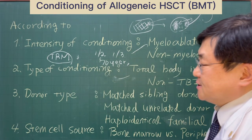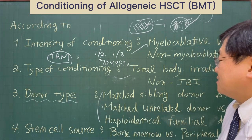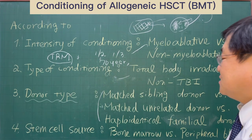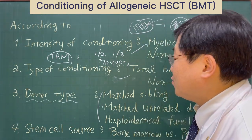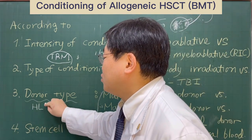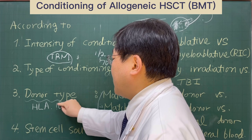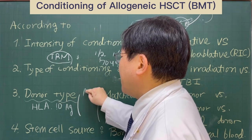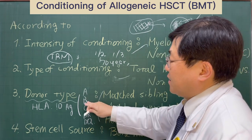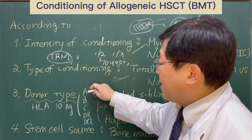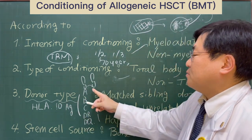The third criterion is according to the donor type. We can use various kinds of allogeneic stem cell transplantation donors according to HLA matching and the relationship between the donor and the patient. To understand this concept, we need to understand human leukocyte antigen. The human leukocyte antigen usually consists of 10 antigens: HLA-A, B, C, DR, DQ. This HLA usually exists in pairs on both chromosomes, so HLA is usually composed of five pairs: A, B, C, DR, DQ on each chromosome.